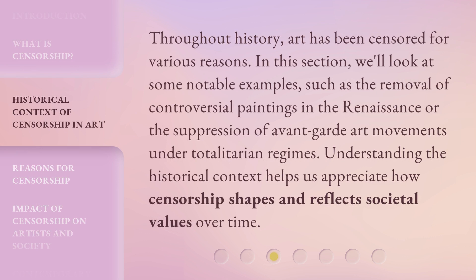In this section, we'll look at some notable examples, such as the removal of controversial paintings in the Renaissance or the suppression of avant-garde art movements under totalitarian regimes. Understanding the historical context helps us appreciate how censorship shapes and reflects societal values over time.